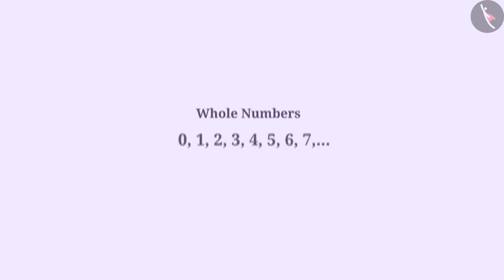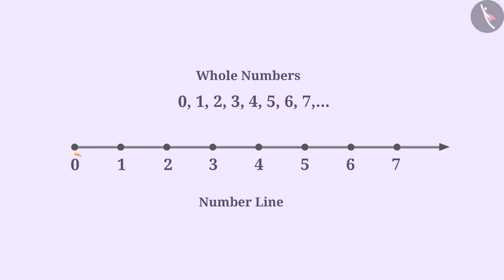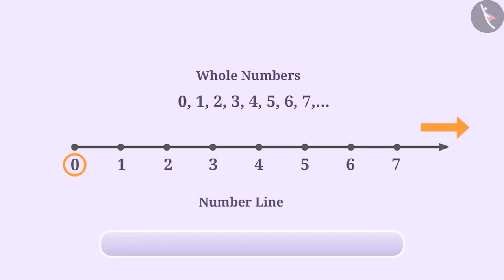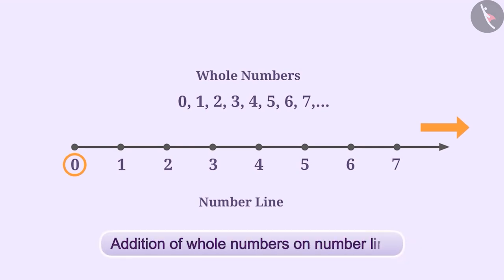The number line of whole numbers starts at zero and goes to infinity. Let us learn how the sum of whole numbers is represented on the number line.